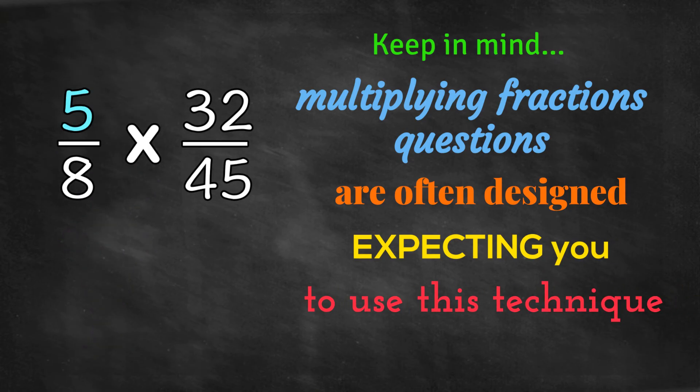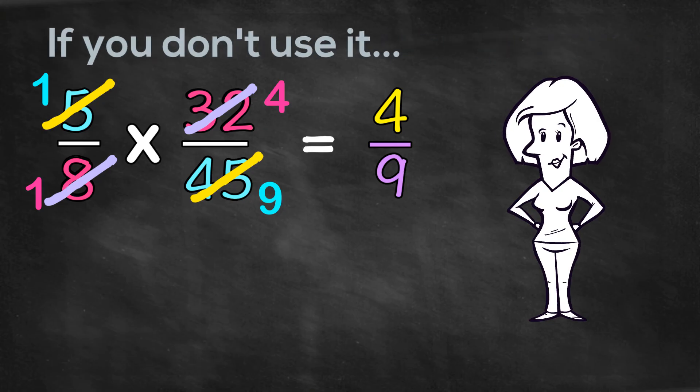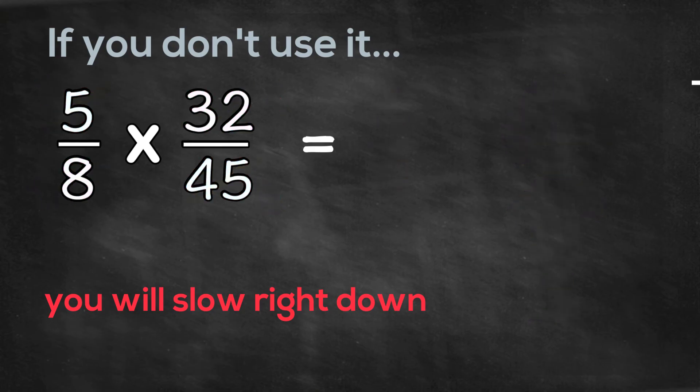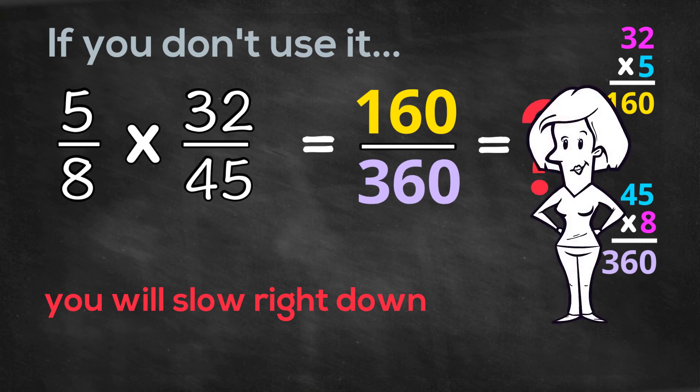We look for a multiples link in a numerator and a denominator. We reduce as far as we can. Then we multiply out. But if you don't use it, you will slow right down, as you can see from this problem. Imagine multiplying that one out and then having to reduce it at the end. No thanks! I'll take the smart path every time.